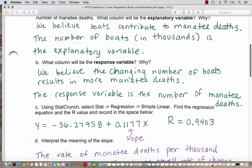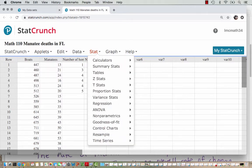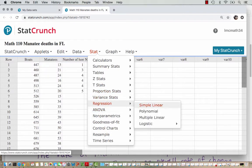We're going to head into StatCrunch and do a simple linear regression and record the regression equation and the correlation value here. Over in StatCrunch in the data file, Math 110 manatee deaths in Florida, I've entered the data for the boats and the manatees. So we are going to calculate the regression. We are going to go to Stat, Regression, and then in our class we're mostly going to use linear regression so we'll choose simple linear.